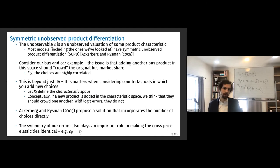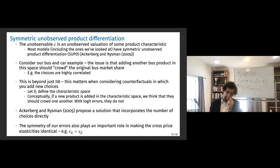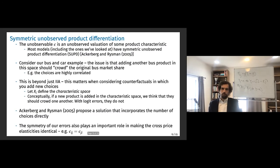The symmetry of our errors also plays an important role: logit implies the cross-price elasticity of i with respect to j should equal that of j with respect to i — the substitution pattern is symmetric in both directions.